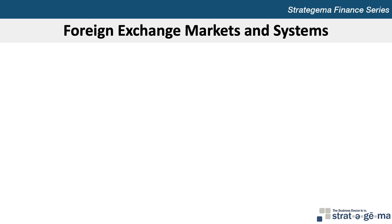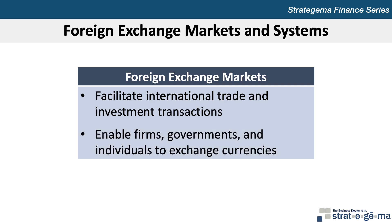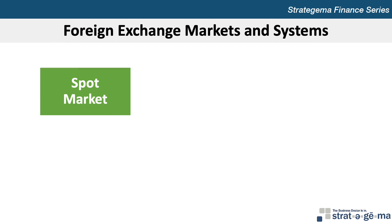Let's begin with a background on foreign exchange markets and systems. Foreign exchange markets facilitate international trade and international investment transactions. They enable firms, government agencies, and individuals to sell their currencies in exchange for the currencies they need to execute their international transactions. The spot market facilitates foreign exchange transactions for immediate exchange at what's known as the spot rate. Exchange rate quotations may either be direct or indirect. The direct exchange rate specifies the value of a currency in US dollars. The indirect exchange rate specifies the number of units of a currency equal to a US dollar, so it's the reciprocal of the direct exchange rate.